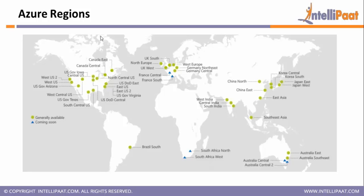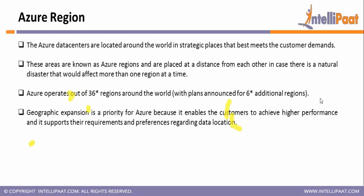Azure basically runs in a region. If you look at this graph, the green one is showing the existing regions where Microsoft Azure is already present. For India, they are present in Mumbai, Pune, and Chennai. The blue triangles are showing upcoming locations — this is based on the 15th December status.